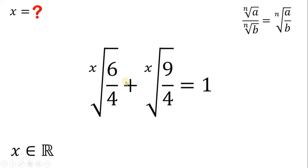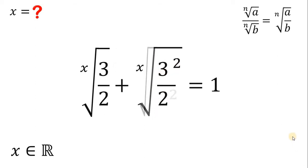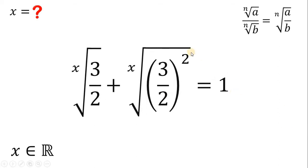Now, let's simplify. 6 over 4 is just 3 over 2. Now, 9 is 3 squared and 4 is 2 squared. And 3 squared over 2 squared can be written as 3 over 2 raised to the power of 2.